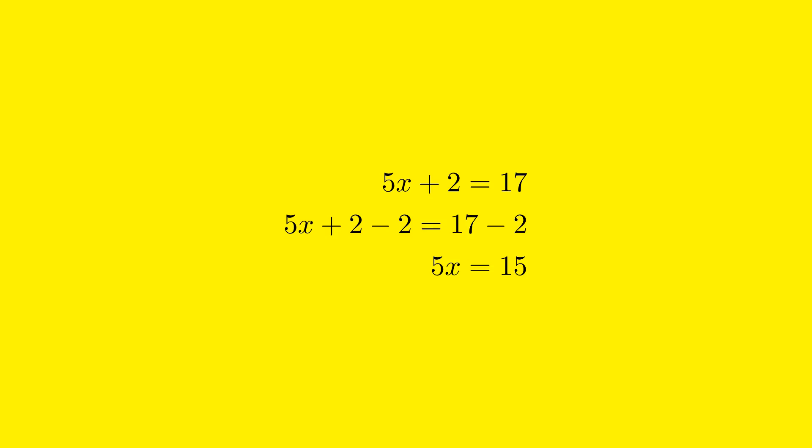To solve the equation 5x plus 2 equals 17, we need to isolate the variable x. The first step is to eliminate the constant term on the left side of the equation. Currently, the equation is 5x plus 2 equals 17, and our goal is to have the term with the variable x by itself on one side.